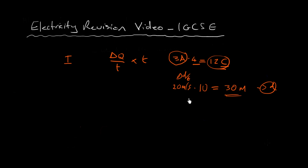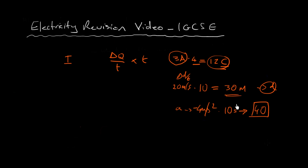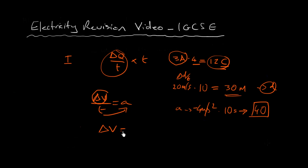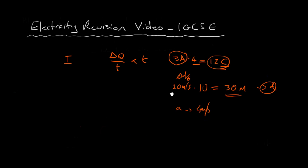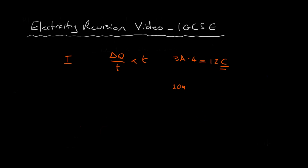Similarly with acceleration: if there's an acceleration of four meters per second squared during 10 seconds, four times 10 gives 40, so your velocity changes by 40 meters per second. Whenever you multiply a rate by time you get the absolute value of the change. This also comes from the maths — for example, acceleration equals change of velocity over time, so rearranging gives change in velocity equals acceleration times time. It comes from both common sense and the mathematics.